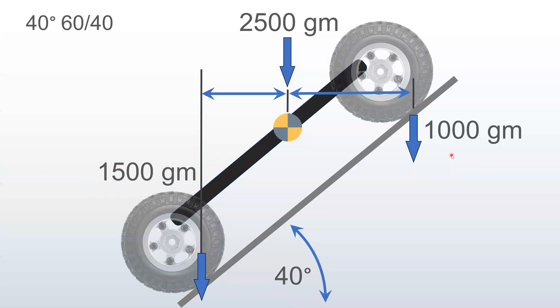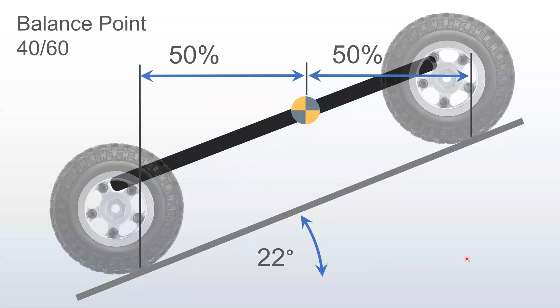So what's the actual balance point when it's exactly 50-50? Well, it's 22 degrees, and again, these are just sample numbers to give you an idea how it works. At 22 degrees, you have the exact same amount of downforce in the front as you do in the rear.